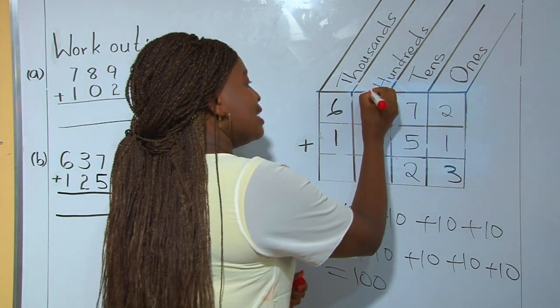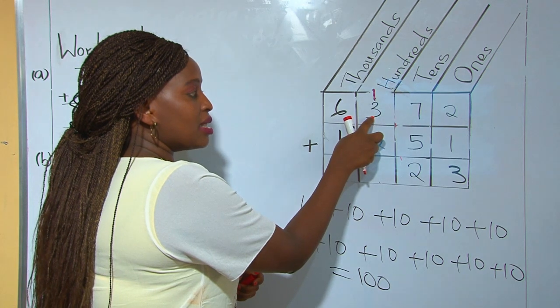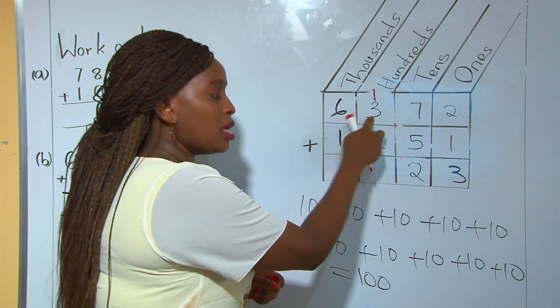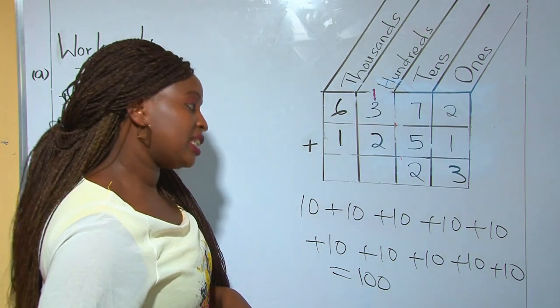Because it makes 100, we add our hundred there. 1 plus 3 becomes 4, plus 2 becomes 6 hundreds. And then we list it down.